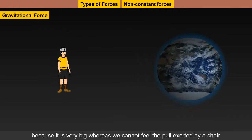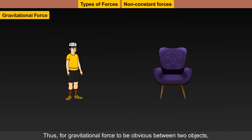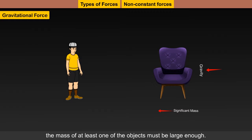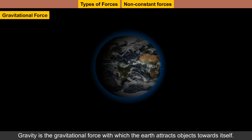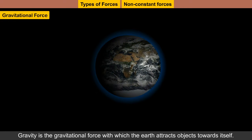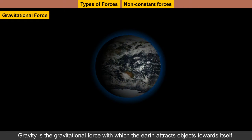Gravitational force is the force with which any two masses or objects pull each other. We can only feel it when an object trying to pull us has a significant mass. For gravitational force to be obvious between two objects, the mass of at least one of the objects must be large enough. Gravity is the gravitational force with which the earth attracts objects towards itself.